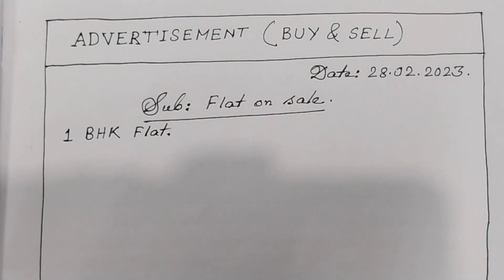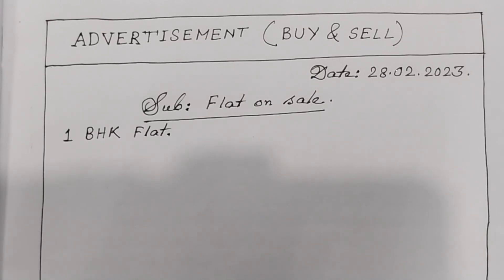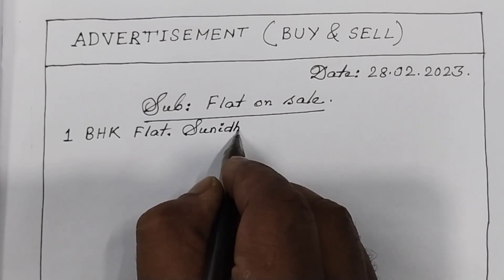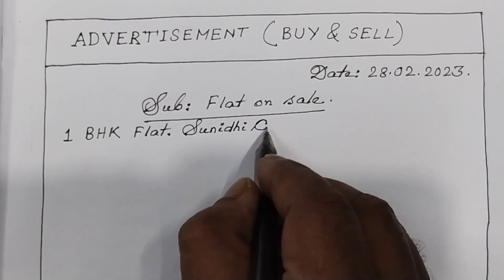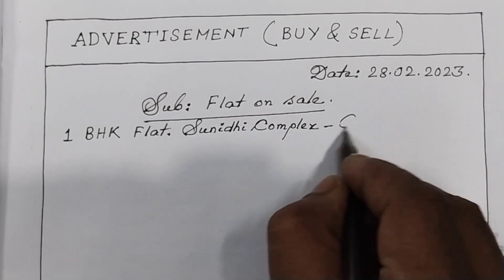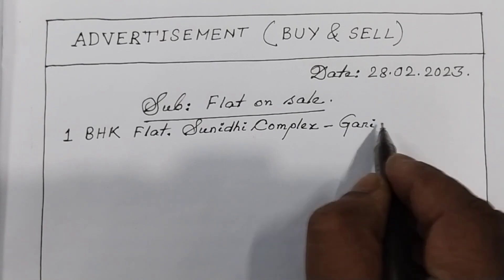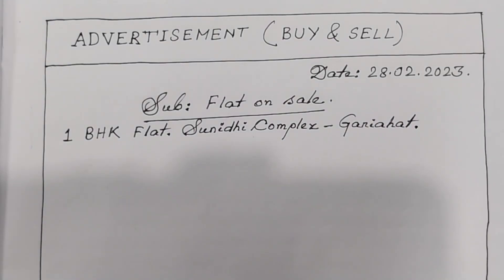If there is a flat, the flat is located in the building. So the name of the building is called Sunidhi Complex. The flat is located in Kolkata. So we are going to say Sunidhi Complex is located in Kolkata.